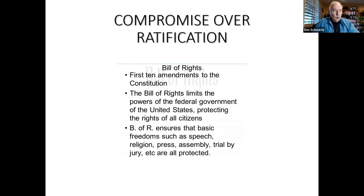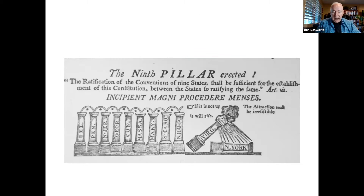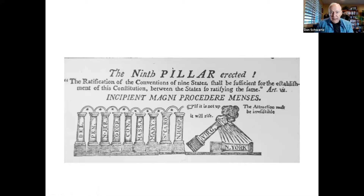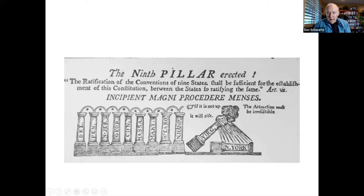When it came to voting whether to approve or reject the Constitution, Delaware was the first state to ratify. New Hampshire became the ninth state. This famous cartoon shows the process of ratification — you needed nine of the 13 states to ratify. Delaware was the first pillar on the left, followed by Pennsylvania, New Jersey, Georgia, Connecticut, Massachusetts, Maryland, South Carolina, and New Hampshire as the ninth state.